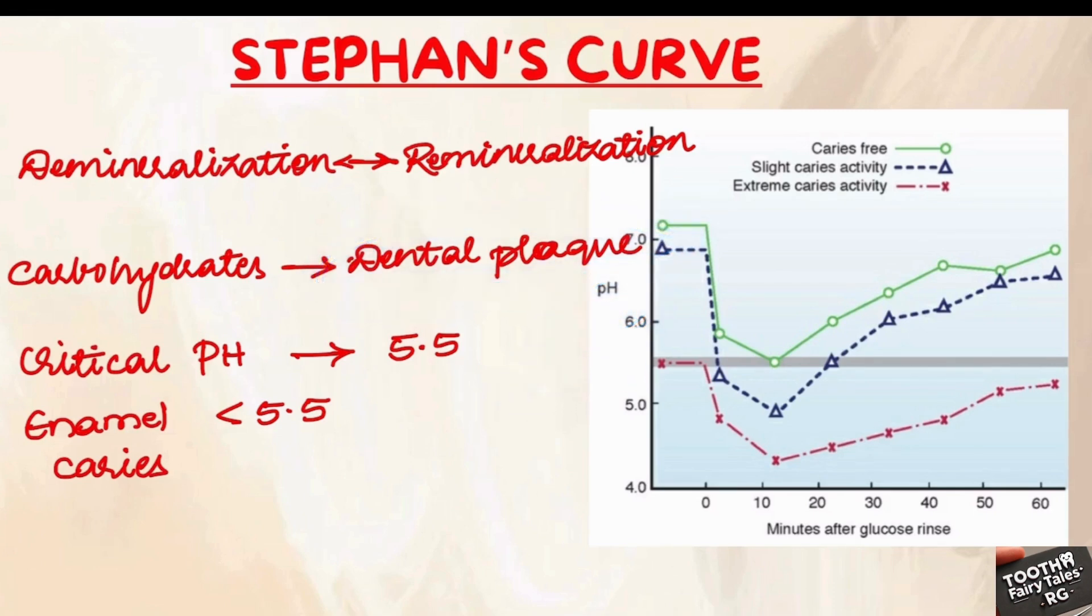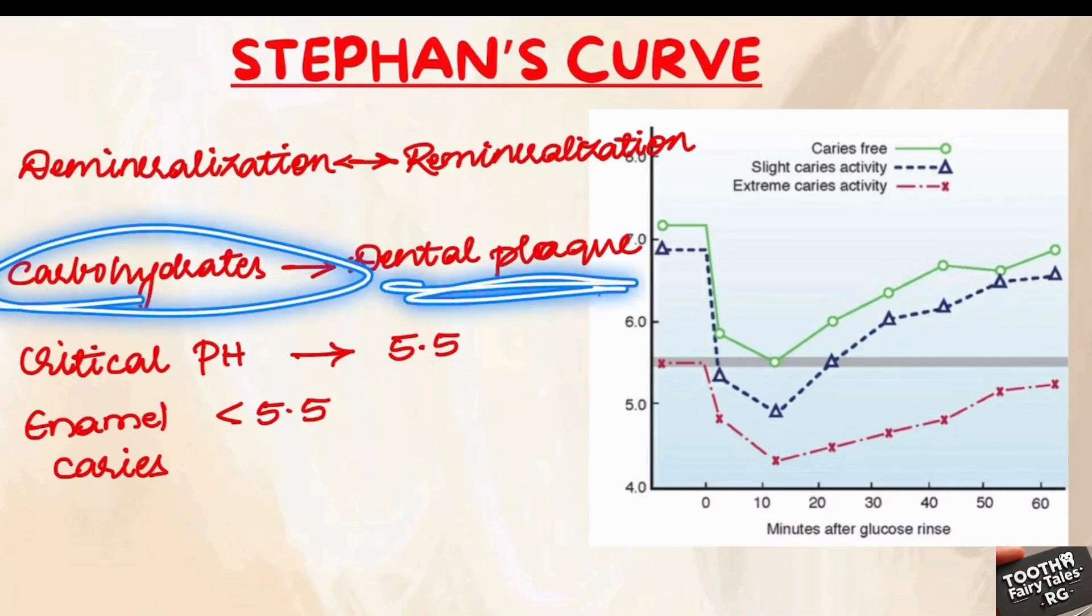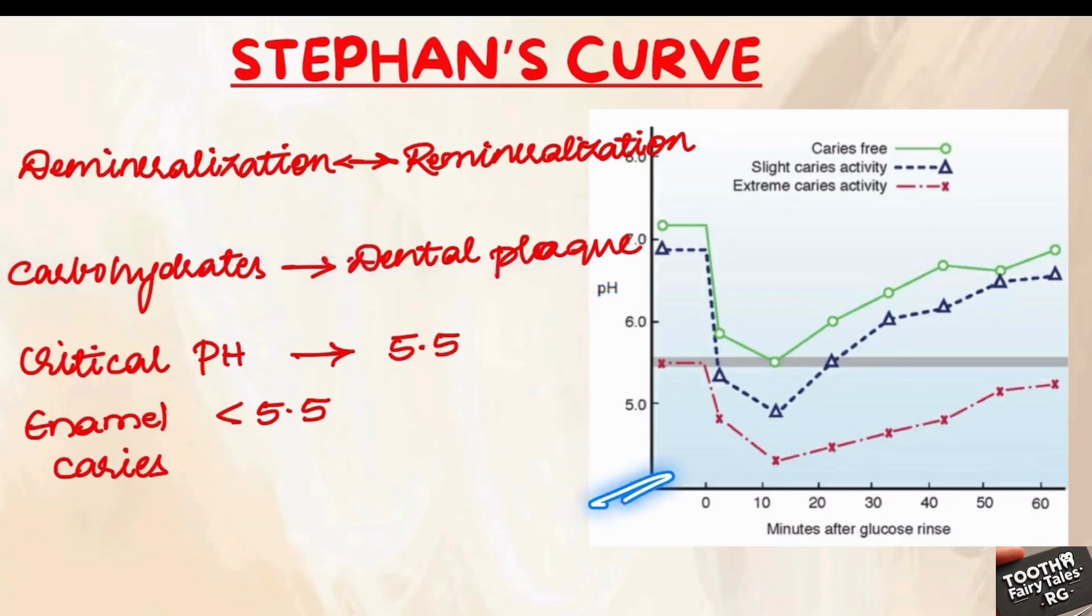change after the consumption of carbohydrates. Understanding this curve is important because it directly relates to how and when our teeth are at risk of demineralization, which can eventually lead to the formation of dental caries.